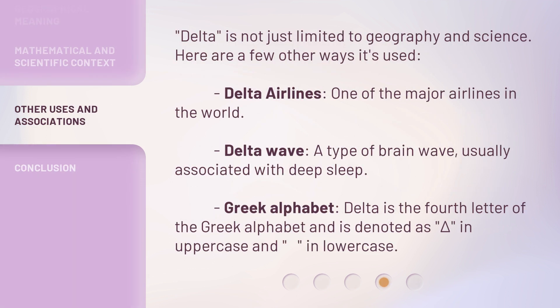Delta is not just limited to geography and science. Here are a few other ways it's used: Delta Airlines, one of the major airlines in the world. Delta Wave, a type of brain wave usually associated with deep sleep. And in the Greek Alphabet, Delta is the fourth letter, denoted as Δ in uppercase and δ in lowercase.